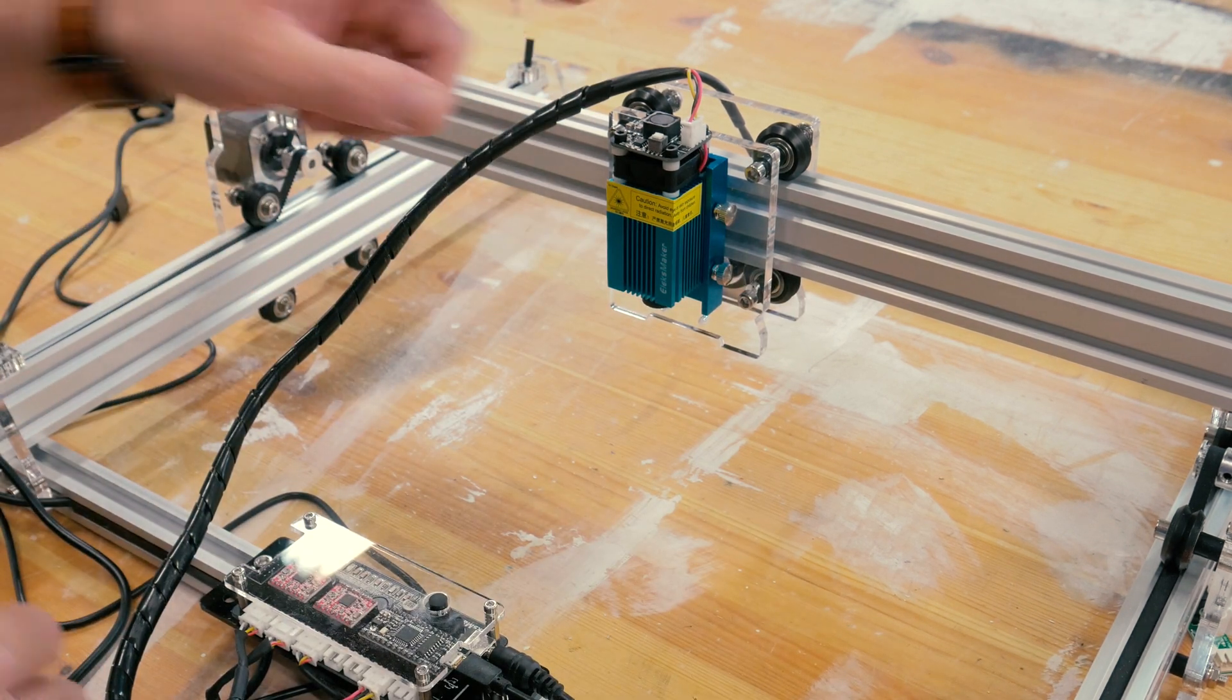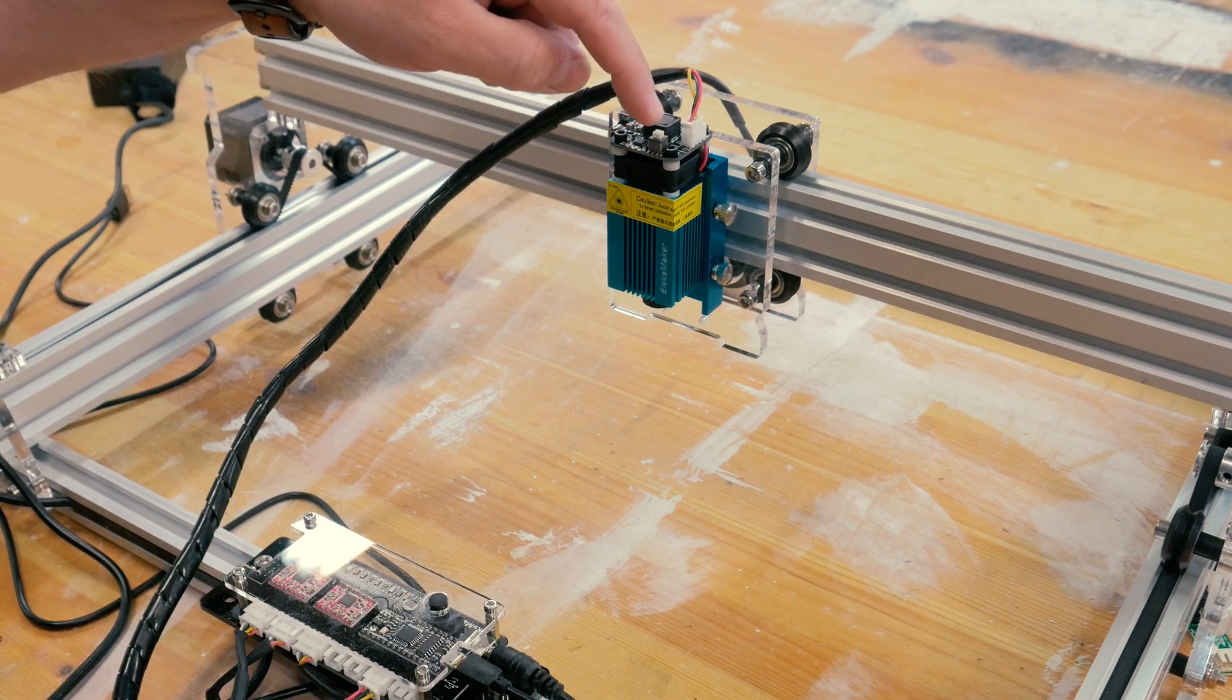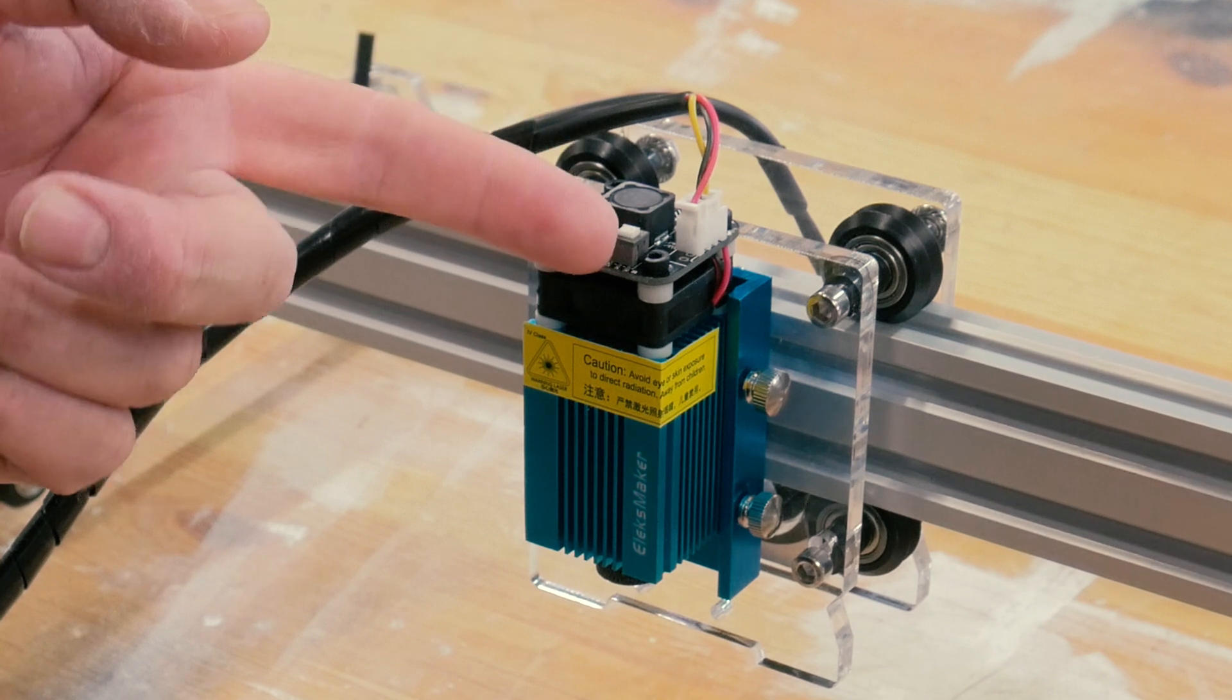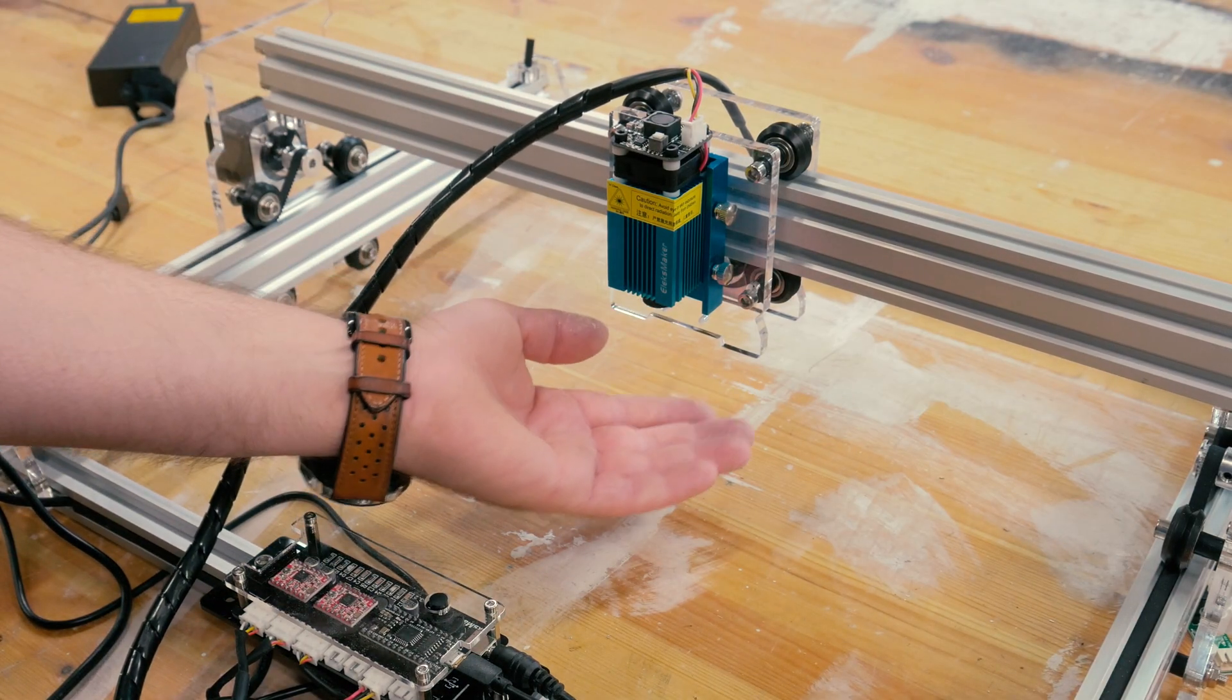Before you turn the power on to the card and to the machine itself, always have this button pressed down, because this is the low light button. That means that the laser gives out a low energy light.